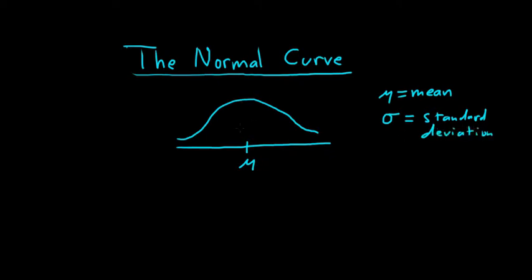How does sigma look in relation to the curve? You can add the standard deviation one time, and that would put you at mu plus sigma. And you can subtract it one time, and that would put you at mu minus sigma. So if you do that, you get this region here, and it turns out that about 68% of the curve is in this yellow region.